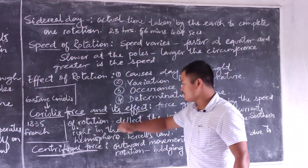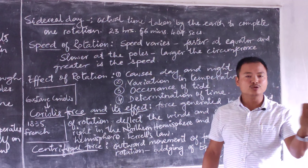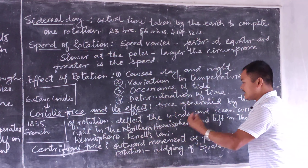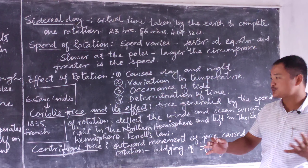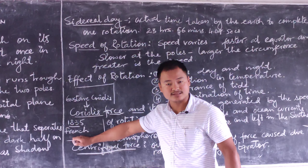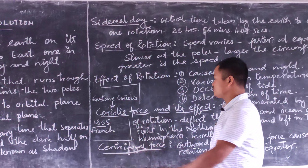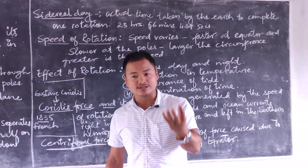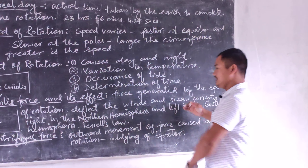Coming to the Coriolis force and its effect: as the earth rotates, the speed generated results in the deflection of winds and ocean currents. This was first discovered in 1835 by a French scientist named Gustave Coriolis. Since then it came to be known as the Coriolis force — a force generated by a rotating body that results in the deflection of wind and ocean currents.